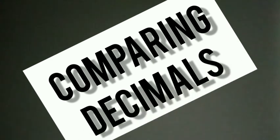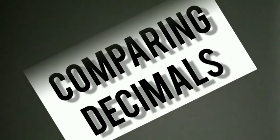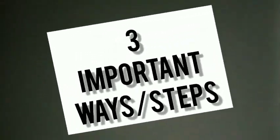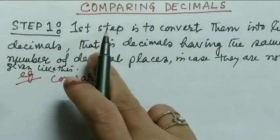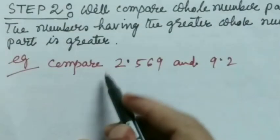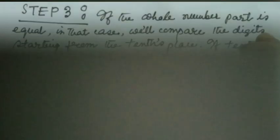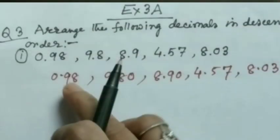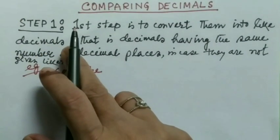To compare the decimal numbers, which one is greater, which one is smaller, here I'm going to explain three important steps. Sometimes using one step we can compare the numbers, but in some cases more than one step might be required for the comparison.